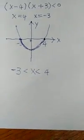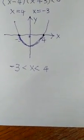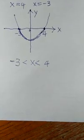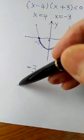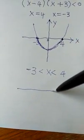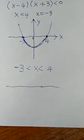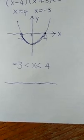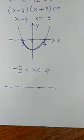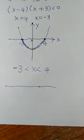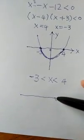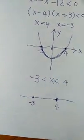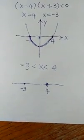Now I am going to give you a shortcut. The shortcut is that you do not need to sketch the graph. What you need to do is draw a straight line called a number line. On this number line, you mark down the two x-intercepts, or the two zeros, which are 4 and negative 3. These two points divide the number line into three parts.